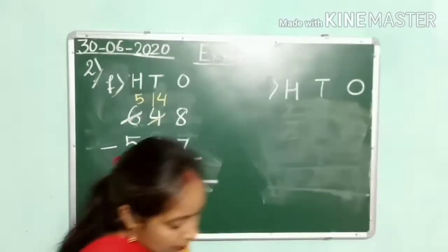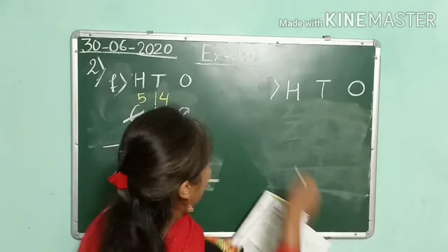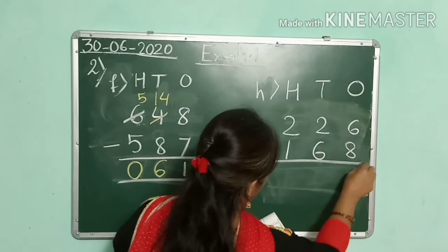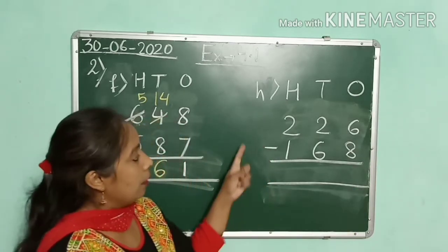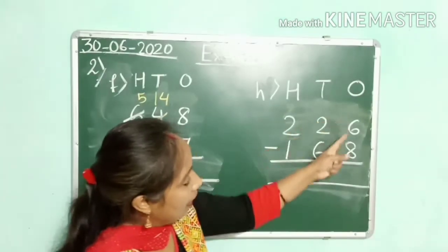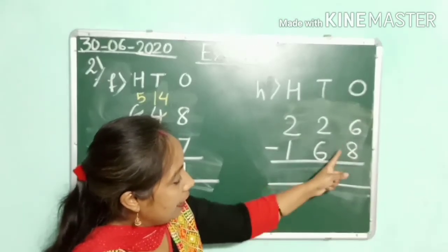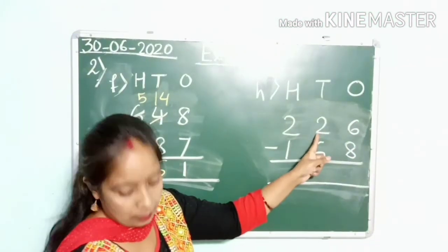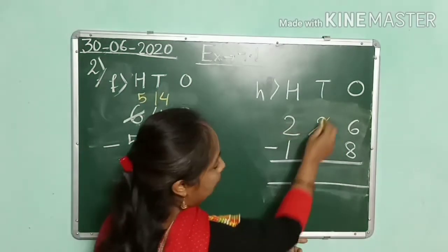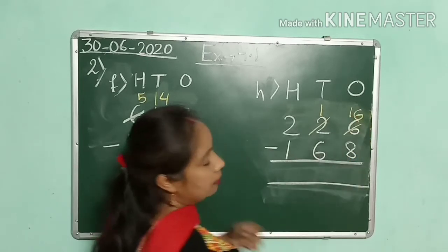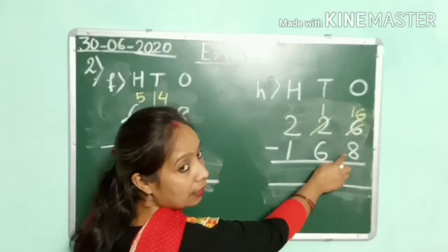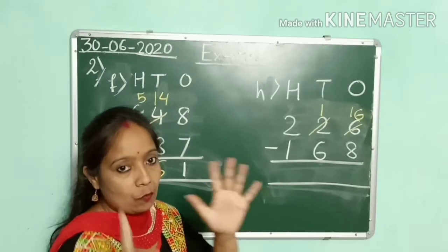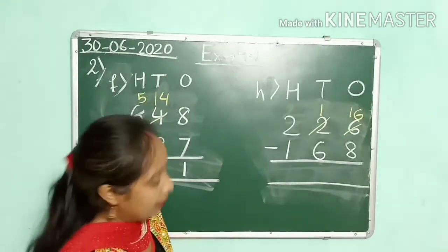Now children, we are moving to question H. Our H number question: you have to subtract 226 from 168. Again, look under the 1s column — we have 6 and 8. Can we subtract 8 from 6? No, because 6 is smaller than 8. So 6 will borrow from 2. So 2 becomes 1 and this 6 becomes 16. Now 16 minus 8 — start counting after 8 till 16: 9, 10, 11, 12, 13, 14, 15, 16. How many fingers? 8. You write here 8.